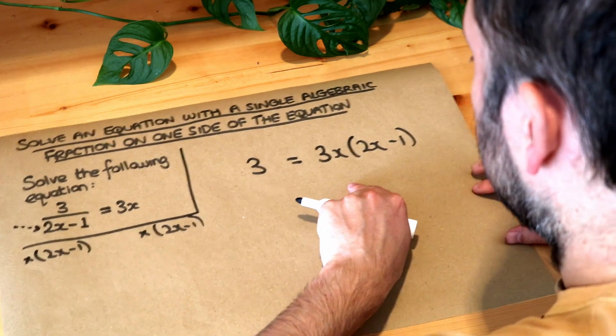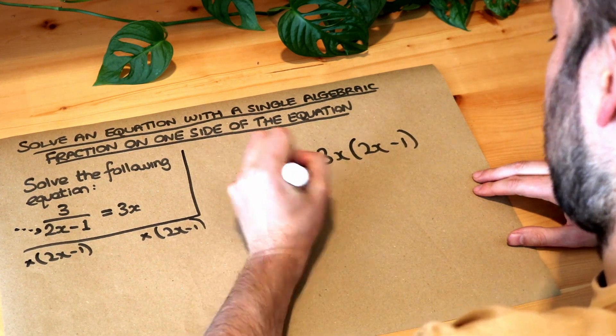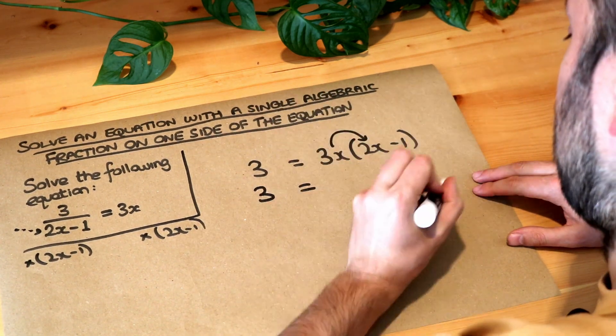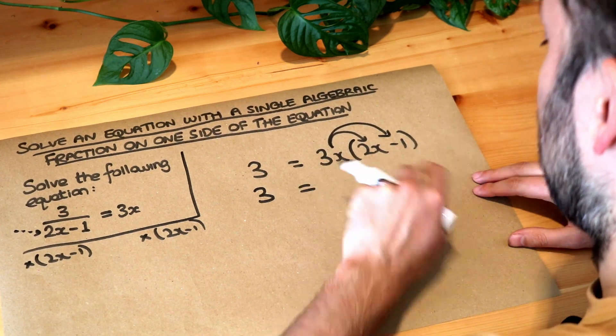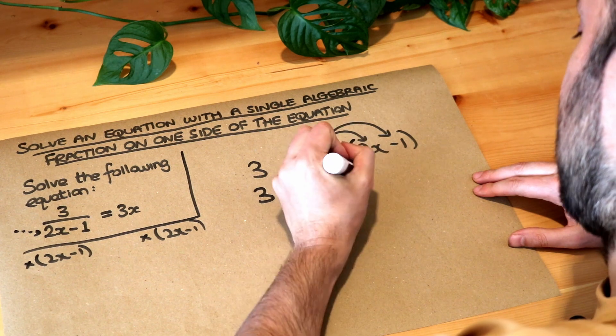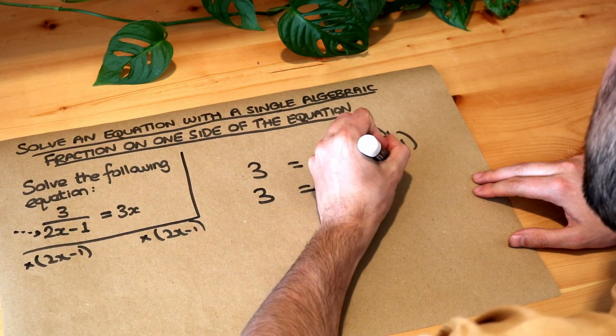So now we want to solve this equation, so all we need to do is expand out these brackets. We've got 3x times 2x and 3x times minus 1. 3x times 2x, well 3 times 2 is 6, x times x is x squared, and then 3x times minus 1 is just minus 3x.